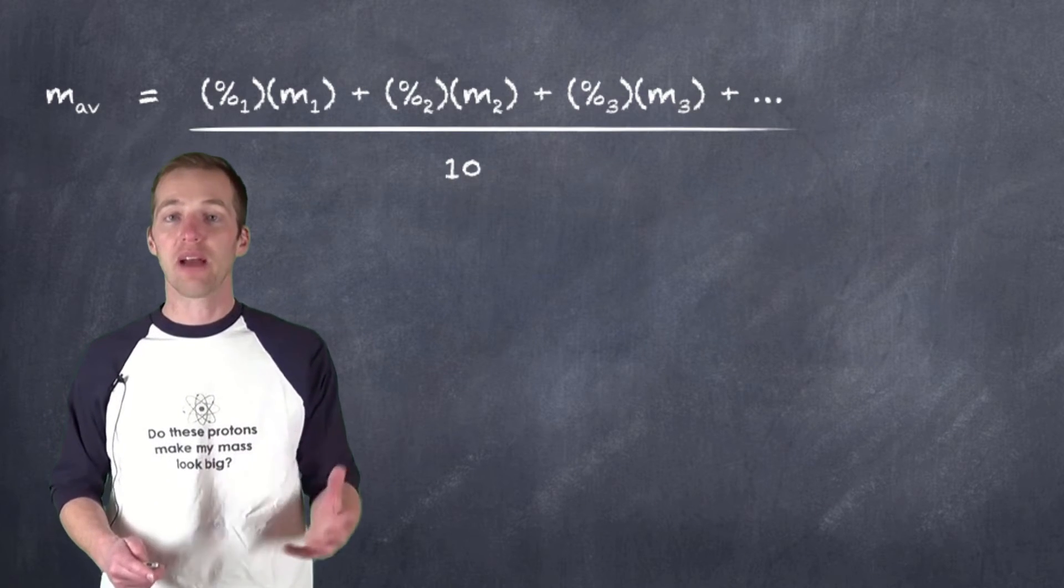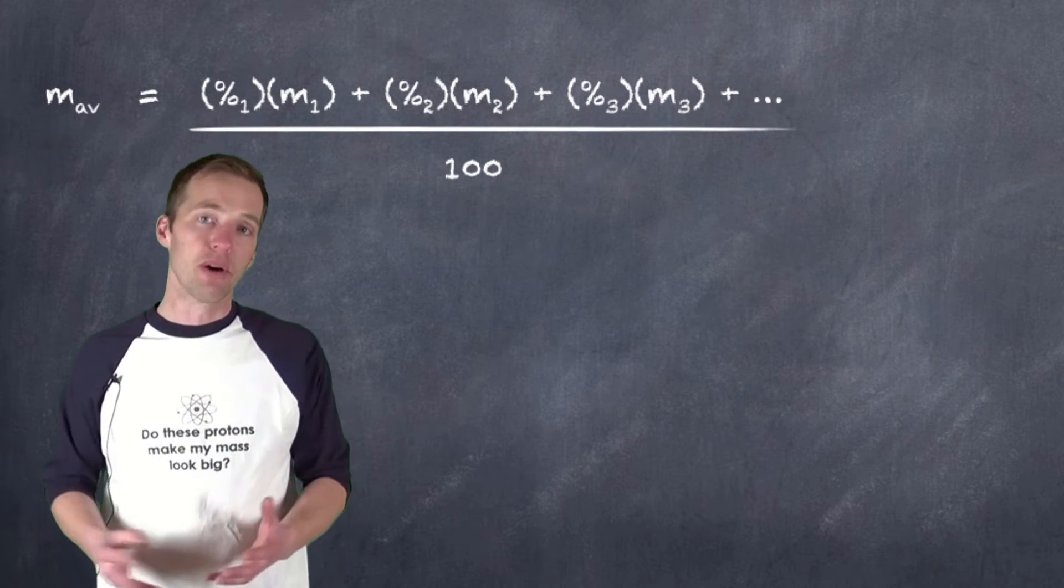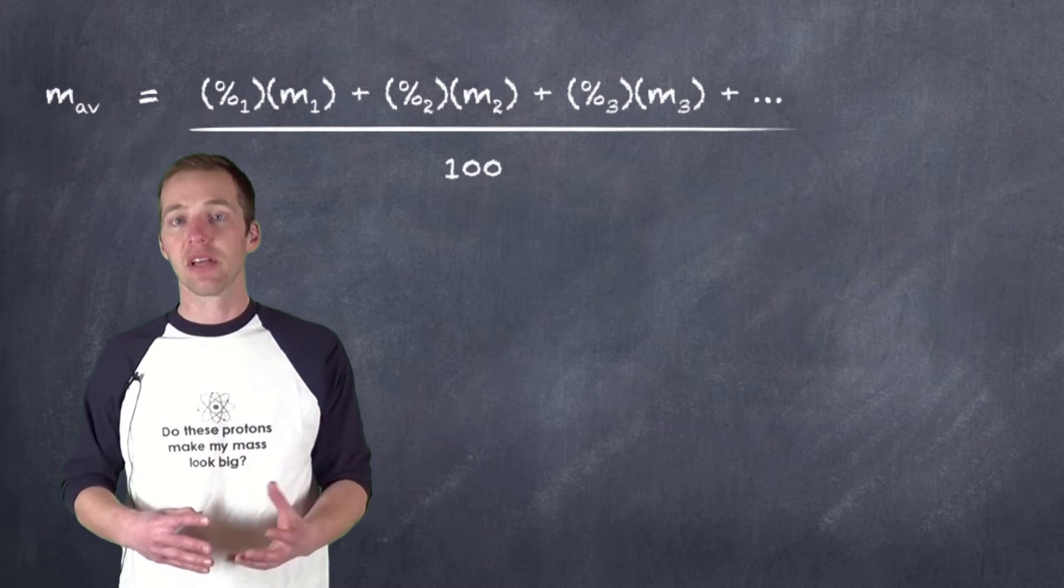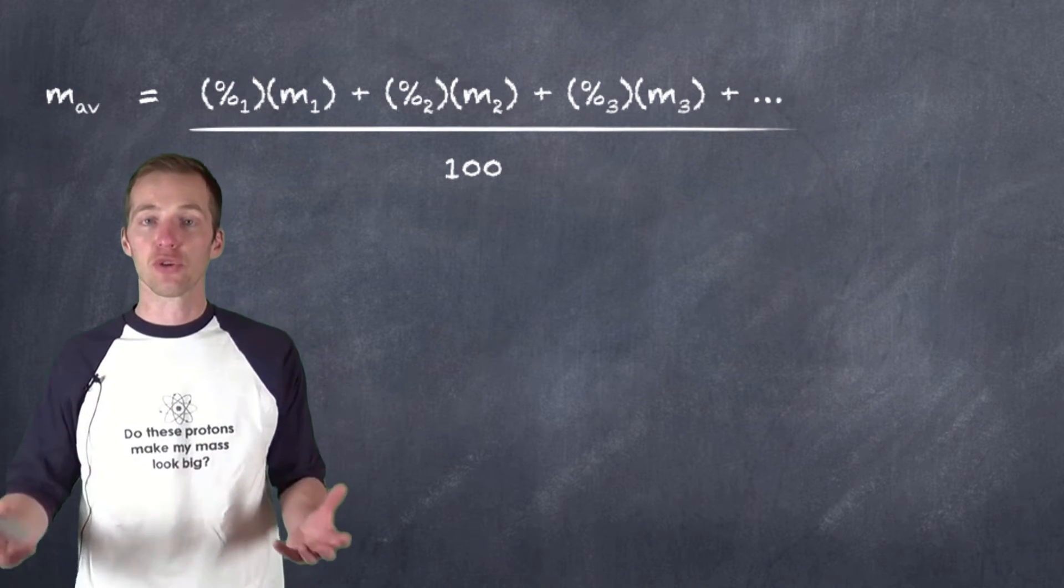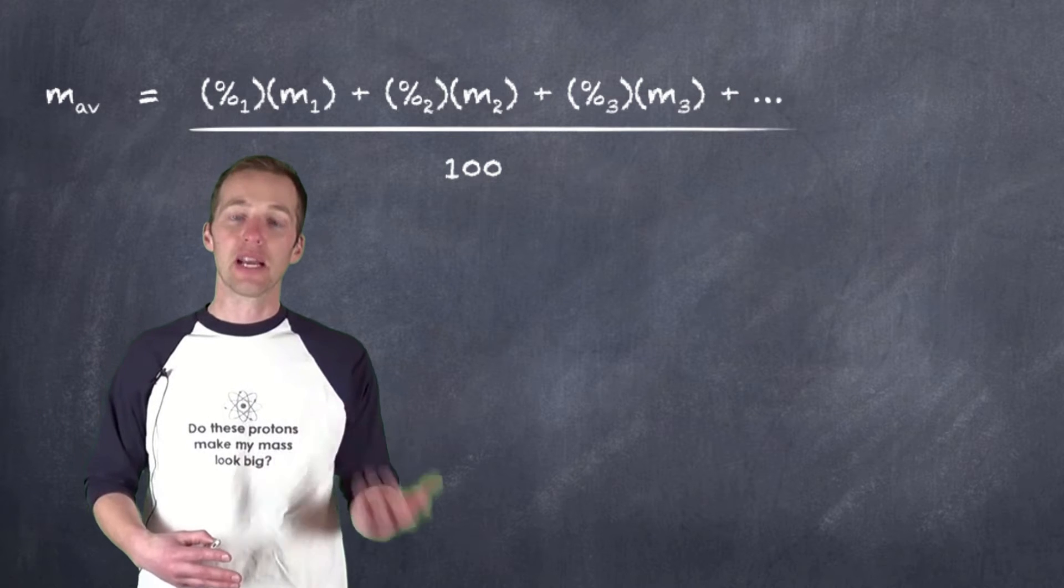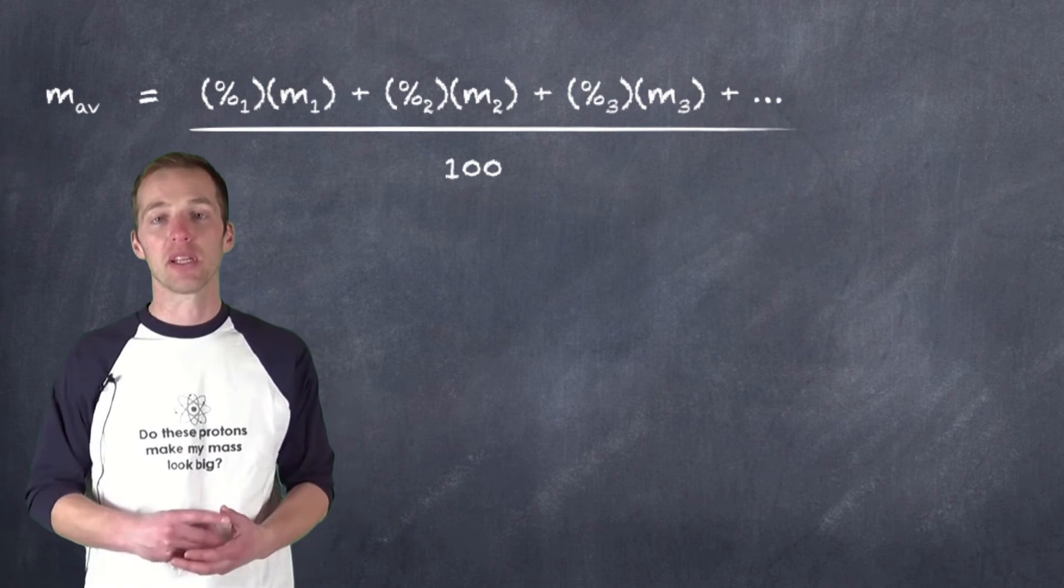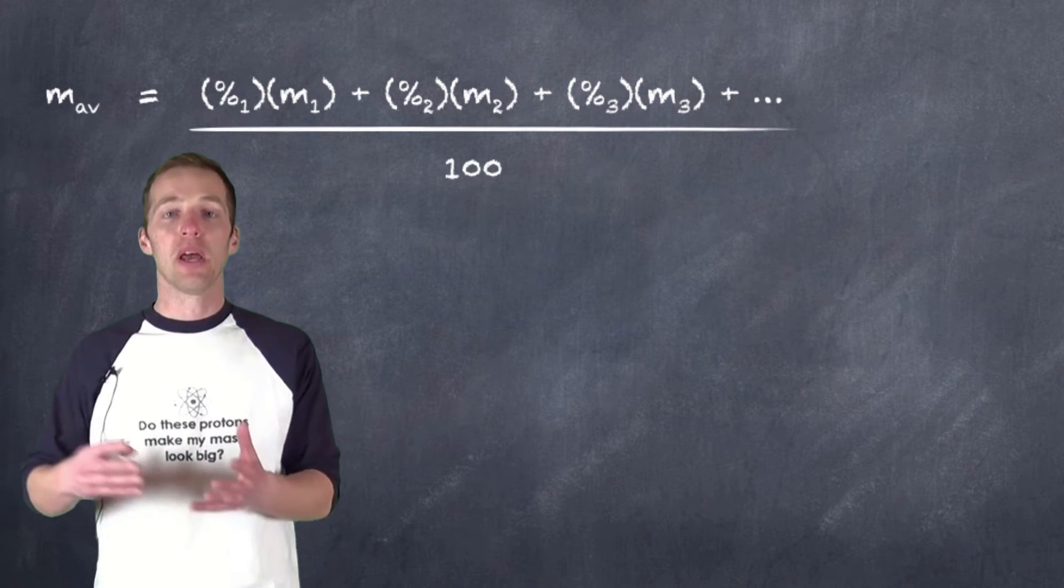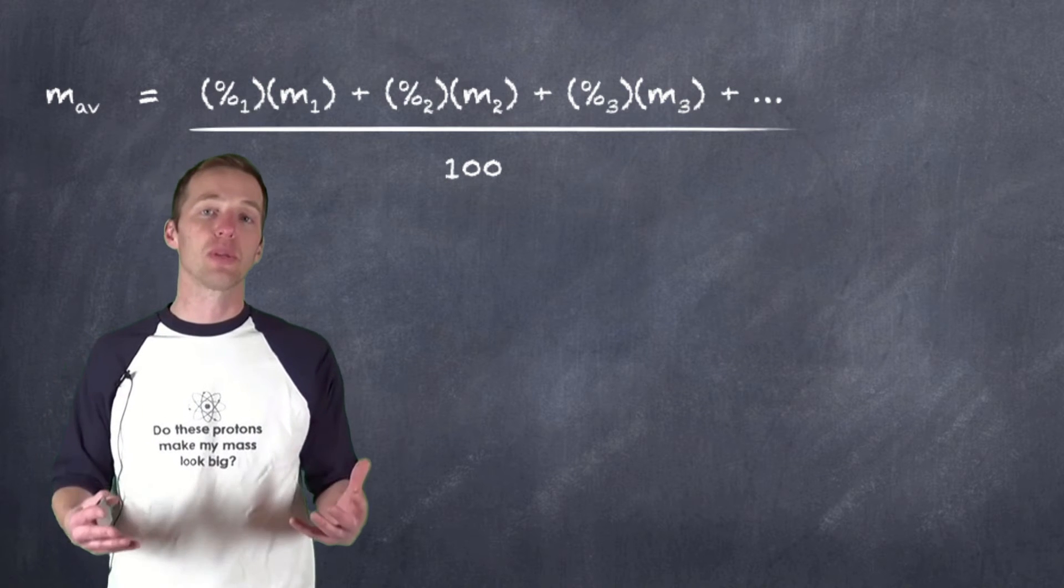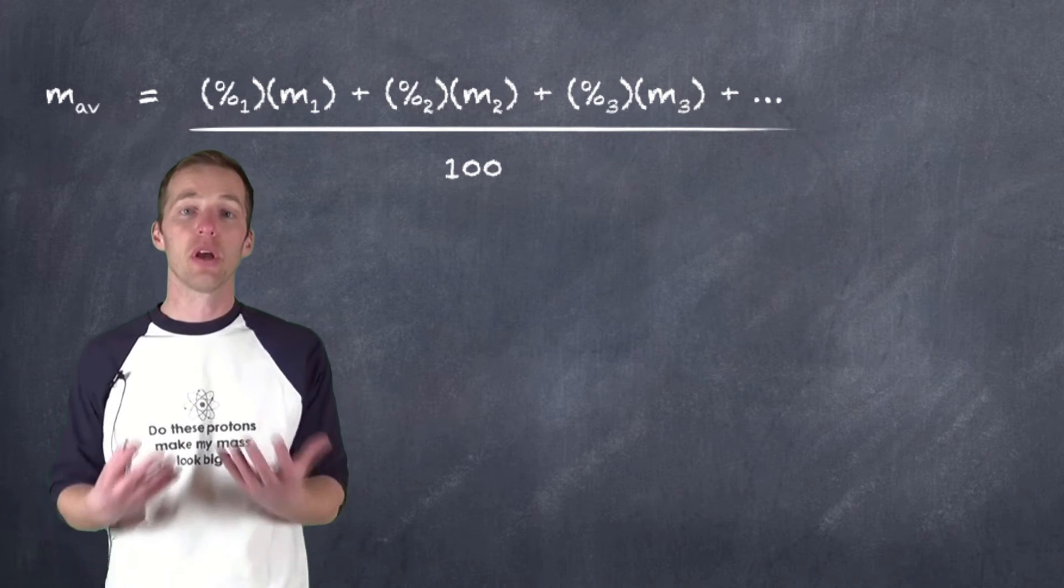Well, again, we have to go back to our weighted average calculation. And the way that we go about figuring this is to take the mass and multiply it by its relative abundance, or its percentage, and add it to the next mass multiplied by its relative abundance of the next isotope, and so on and so on, until all of the naturally occurring isotopes are considered.